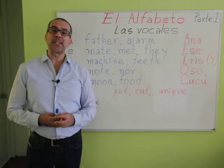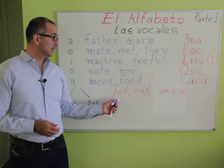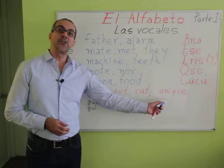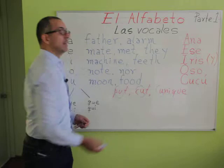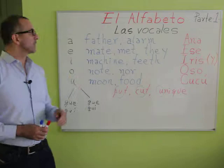In English it's very different. Let's say for example the letter or the vowel U — pay attention to the U sound here: 'put,' but here we have 'cut,' and here we have 'unique.' So we say 'put,' 'cut,' and 'unique' — three different sounds for the same vowel. That doesn't happen in Spanish. In Spanish we have five vowel sounds, five vowels.